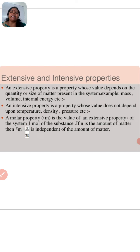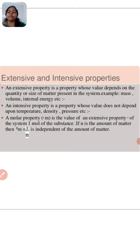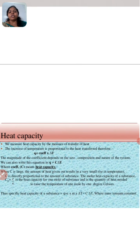A molar property is a value of an extensive property X of the system for one mole of the substance. If n is the amount of matter, then Xm is equal to X upon n, and it is independent of the amount of matter.